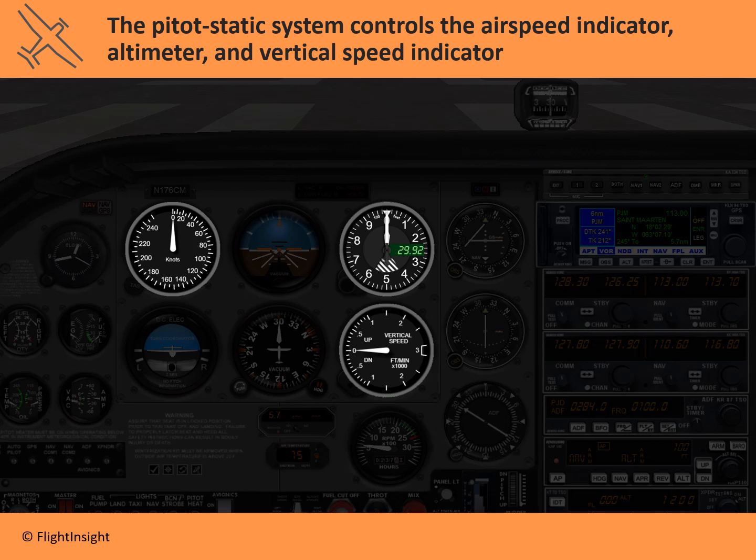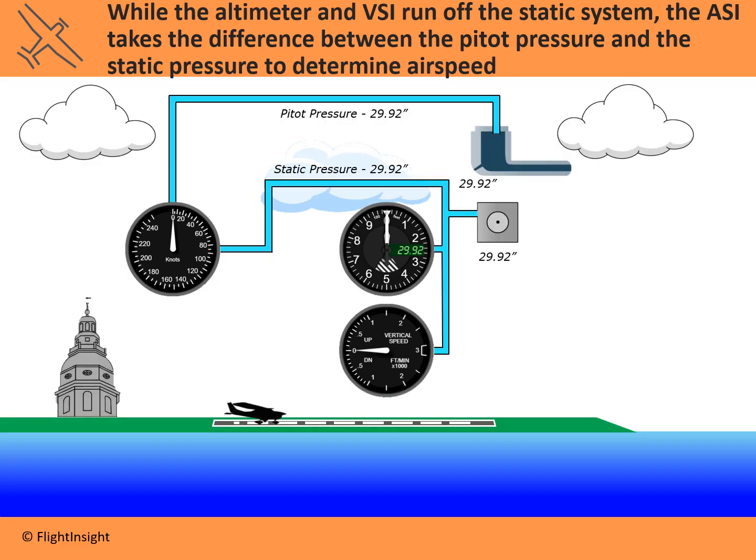Changes in air pressure are going to affect these instruments in different ways. The altimeter and vertical speed indicator are only connected to the static port, so their only source of information comes through that static tube or opening, usually on the side of the aircraft or oriented to the side with respect to relative wind. The airspeed indicator is connected to the static pressure system, but it's also connected to the pitot system, so changes in both of those systems are going to register on the airspeed indicator.